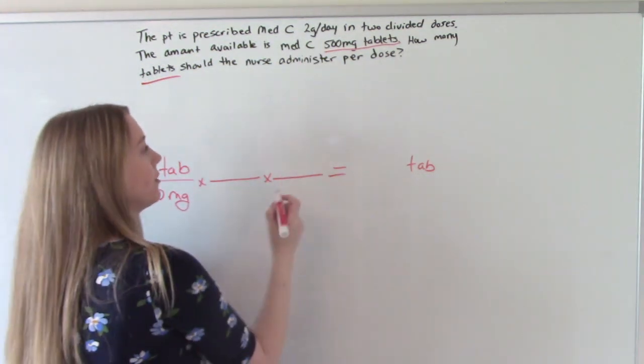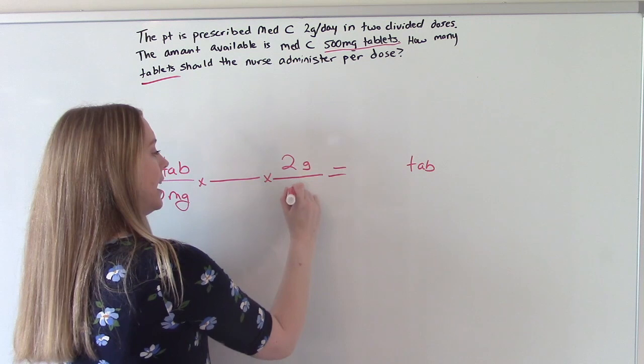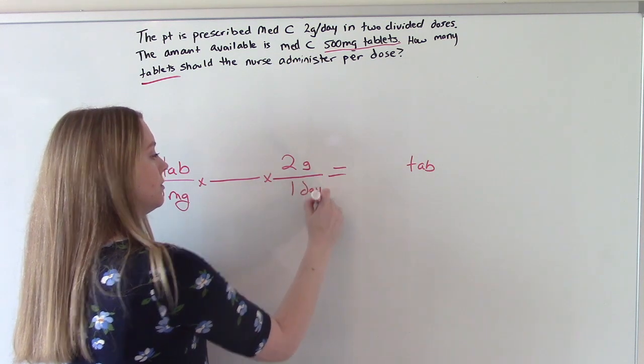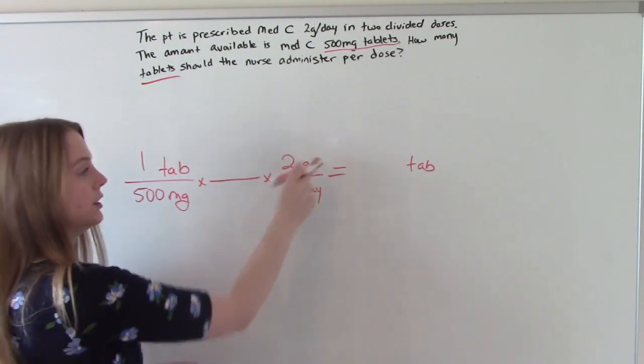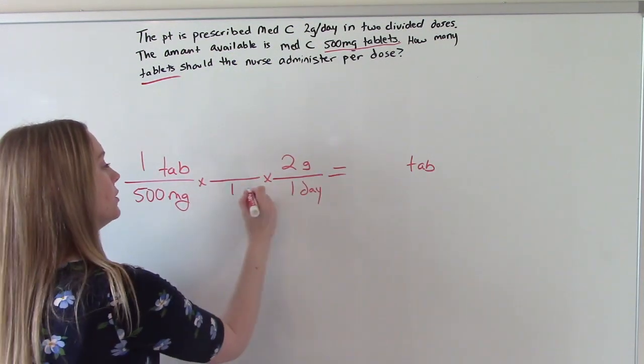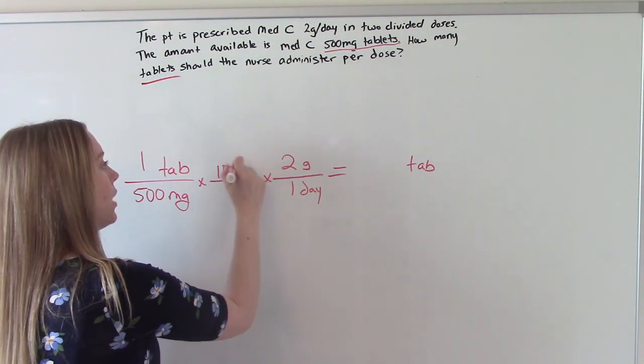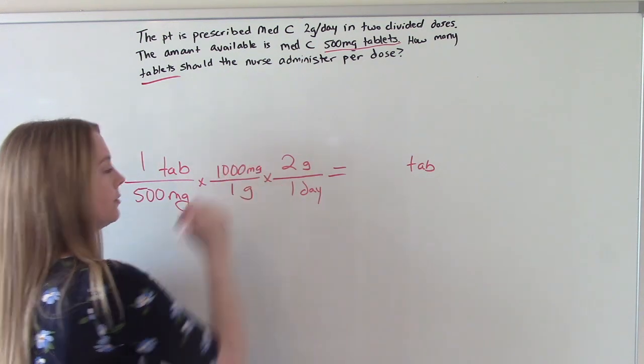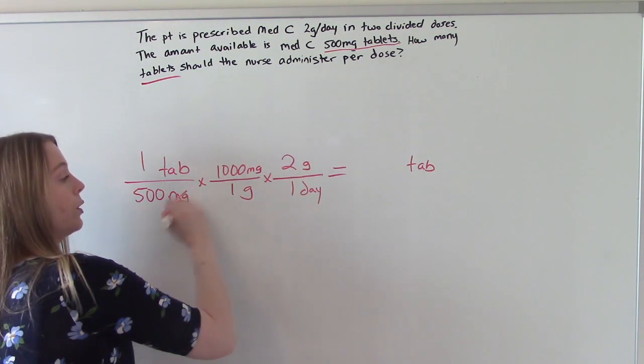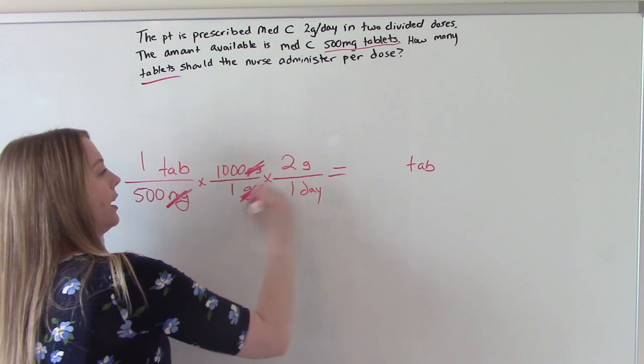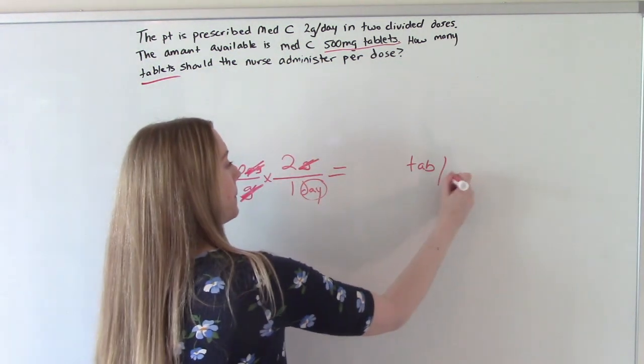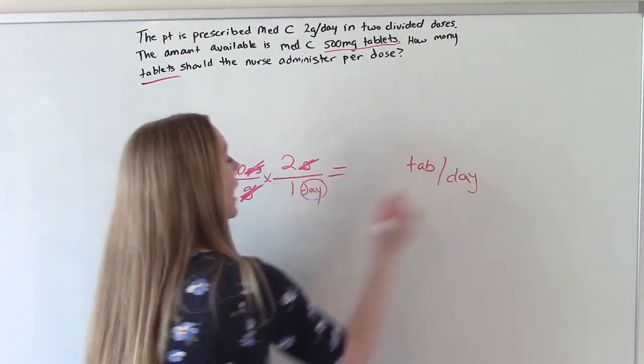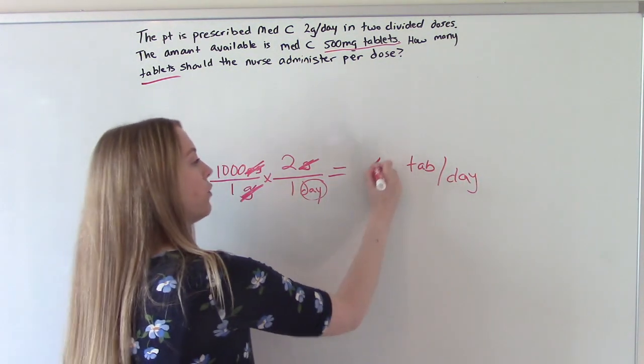What is the prescription? Two grams a day. And then what's our converting factor? Milligrams to grams. So one gram is 1,000 milligrams. So milligrams will cancel. Grams will cancel. And we'll end with tablets per day in our answer. And when you do the math, you get 4.